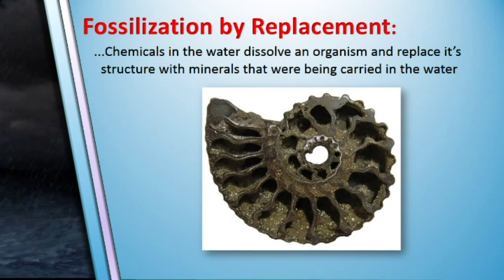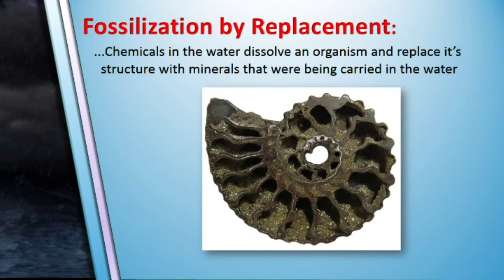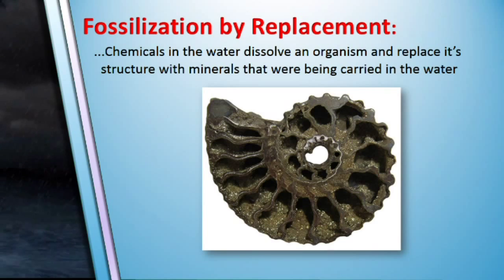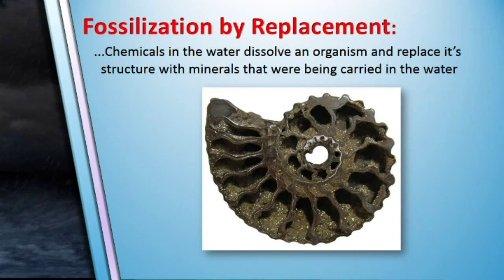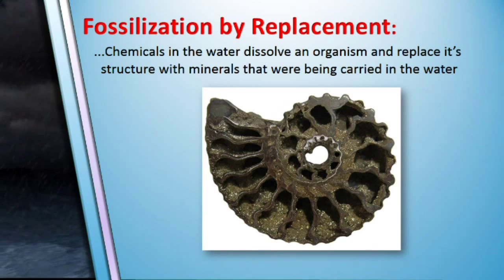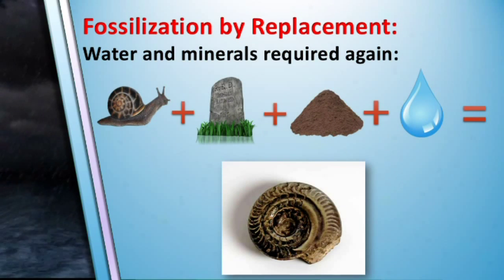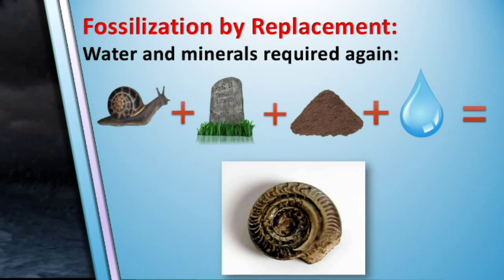The last method of fossilization we need to discuss is based on a process called replacement. In this method, chemicals in the water dissolve an organism and replace its structure with minerals that were being carried in the water. So the shell or bones of the organism are no longer present, but a copy has been made in the minerals that basically matches the original structure. This type of fossil clearly requires water and dissolved minerals to form.